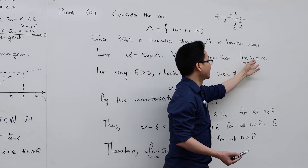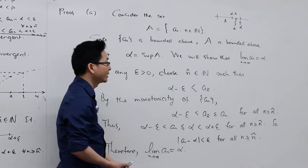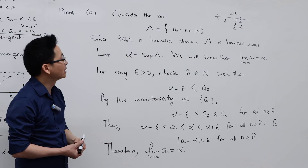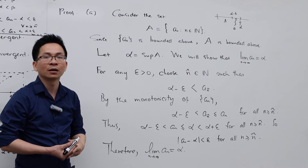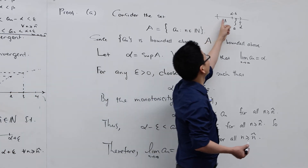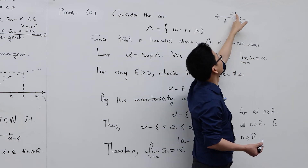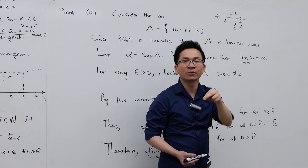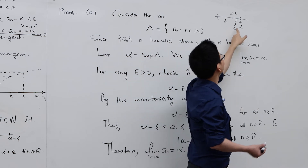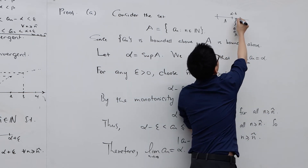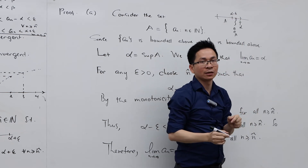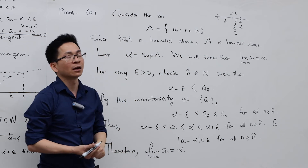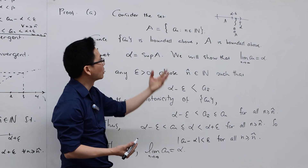Our goal is to show that lim aₙ = α as n → ∞. We will use the definition of convergence to accomplish this, along with an important property of the supremum called the epsilon characterization. Since α = sup(A), if we subtract a positive number ε from α, the number α - ε is strictly less than α. Since α is the least upper bound, anything strictly less than α cannot be an upper bound. So there must be some element a ∈ A with a > α - ε, and certainly a ≤ α since α is the upper bound. Please watch my video lectures on the supremum and infimum for more on this property.